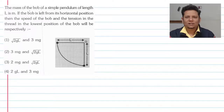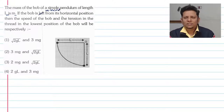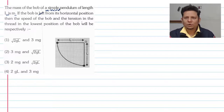The question says: the mass of a bob of a simple pendulum of length L is m. If the bob is released from its horizontal position, then the speed of the bob and the tension in the thread at the lowest position of the bob will be respectively...